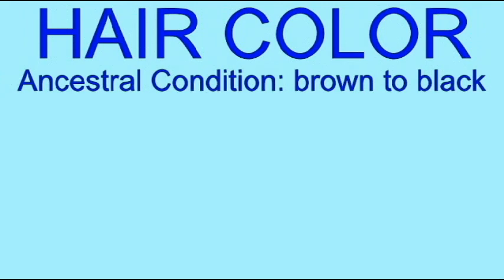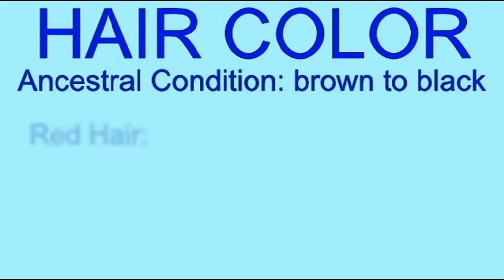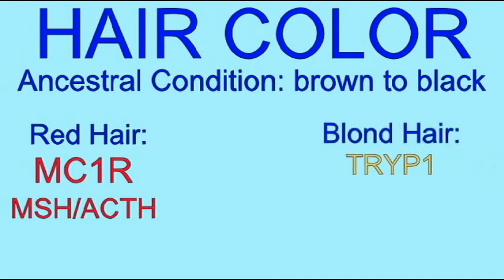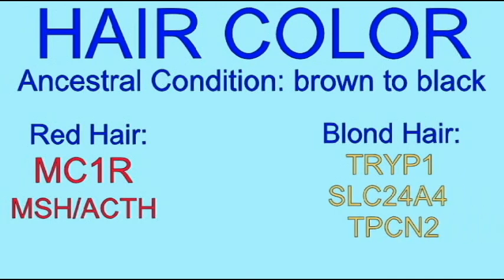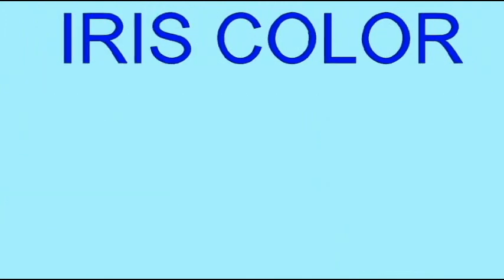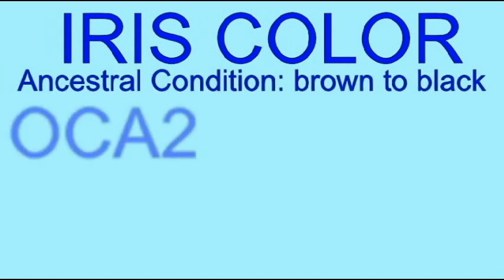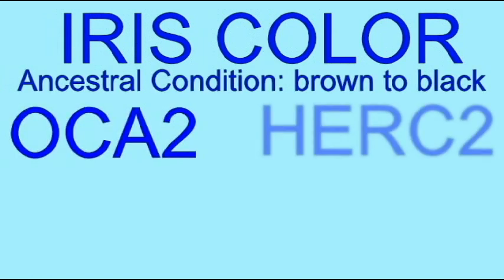The ancestral human hair color was brown to black. A number of genetic mutations can result in red hair, such as changes to the MSH or MCR1 genes, while other changes can result in blonde hair. These would include mutations in the tyrosinase homologues, or of the KIT growth factor affecting melanocyte longevity, or of the ion channel which affects potassium levels in melanosomes.